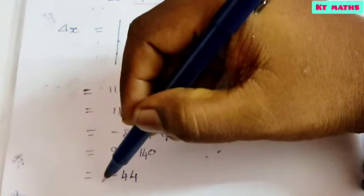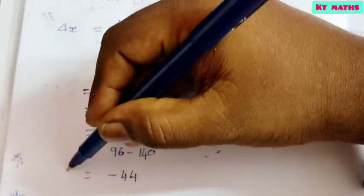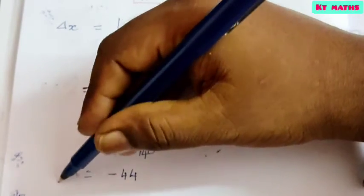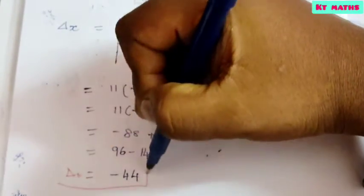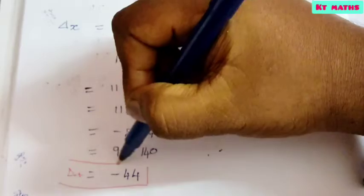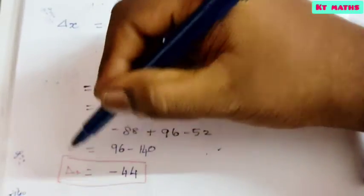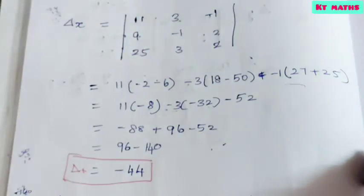So 96 minus 140 gives answer minus 44. Therefore Δx = −44.